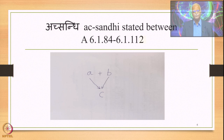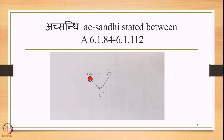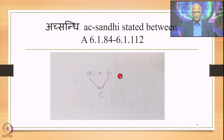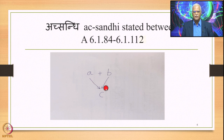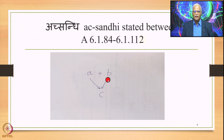To show this in the form of an equation: if you have A followed immediately by B in the Samhita mode — where A is immediately before B and B is immediately after A — then in place of both A and B you have one substitute C. A and B are the Sthani and C is the substitute; A plus B is the input and C is the output.